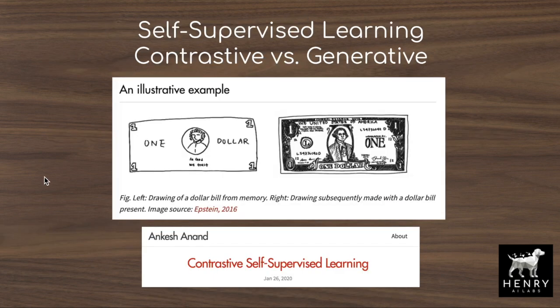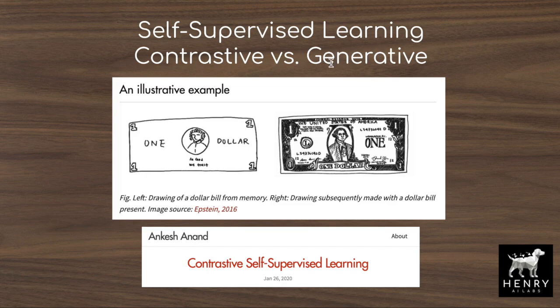This image is an interesting example of why we might prefer contrastive self-supervised learning over generative modeling. If you ask somebody to draw a dollar bill, unless they've really memorized it, they'll draw something rough — suggesting our representations of objects are just enough to distinguish them from other objects. We don't store a full reconstruction; we only represent a dollar bill enough to know it's not a cat or a coffee cup. That's the core idea of contrastive learning: learning to tell objects apart, rather than doing full pixel reconstruction like an autoencoder with an L1 loss.